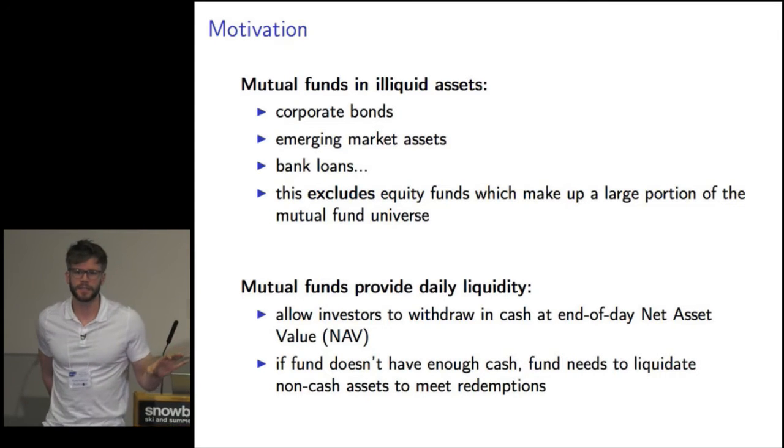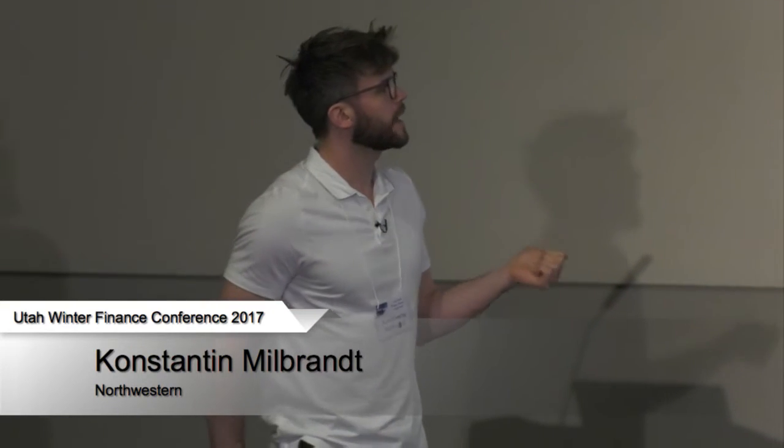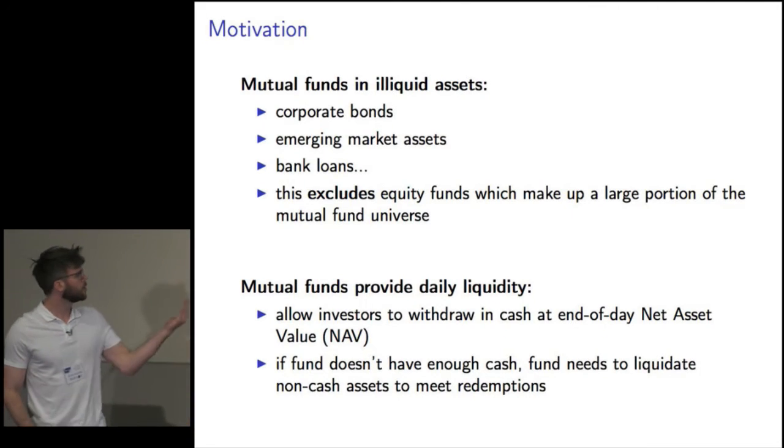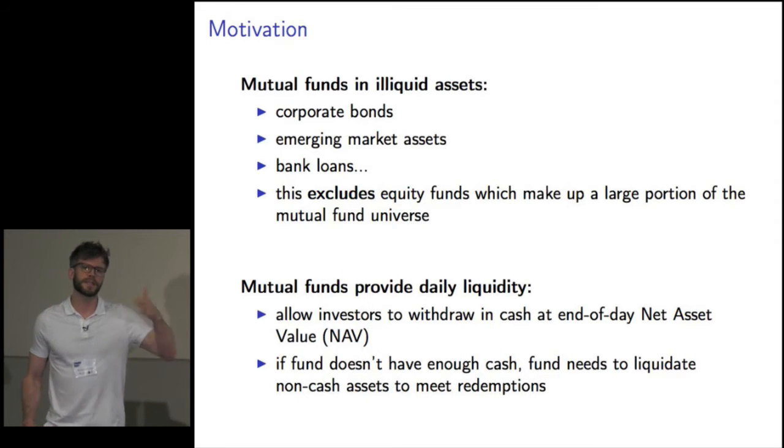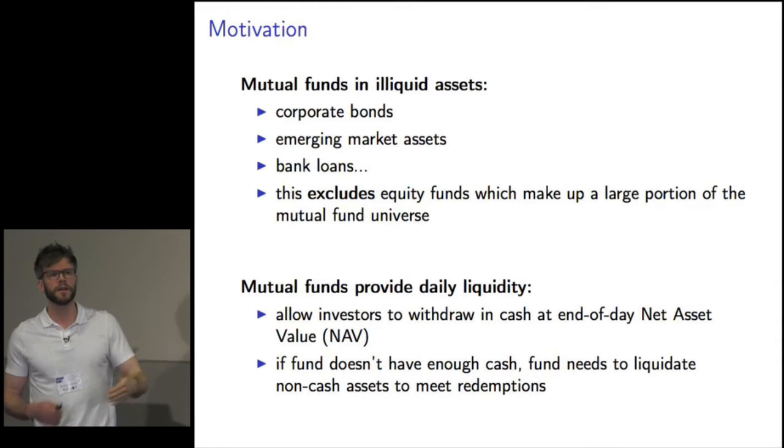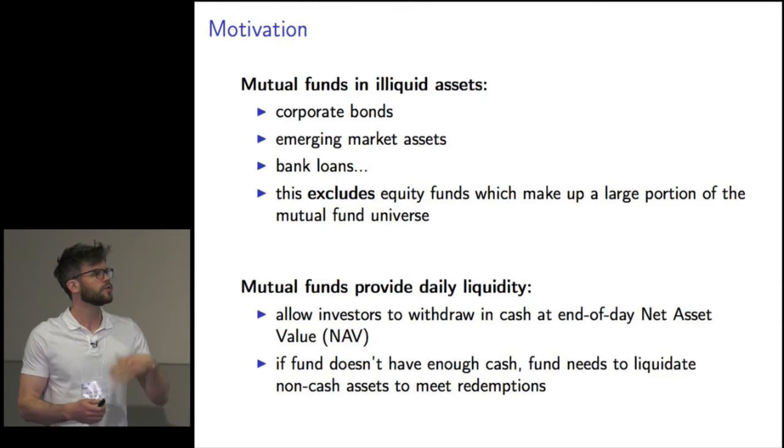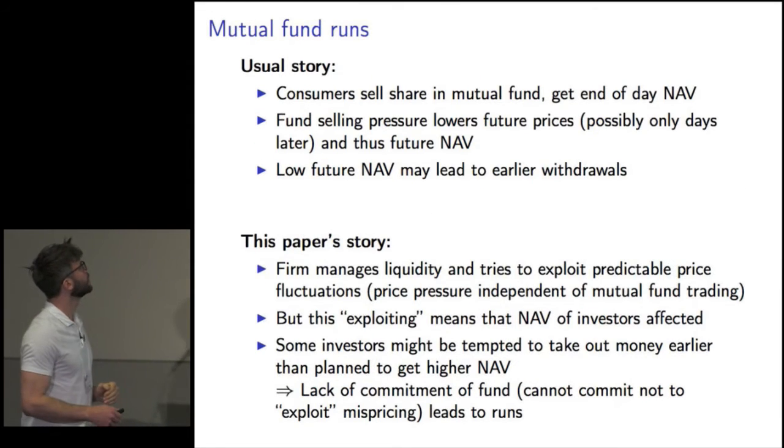If you have a mutual fund in illiquid assets, one benefit it provides to the holder is daily liquidity — allowing an investor to withdraw in cash at the end of the day at the net asset value (NAV). If the fund doesn't have enough cash to meet redemptions, it needs to liquidate non-cash assets. The main mechanism of the paper originates exactly from this: when you need to liquidate assets at below-market prices, you affect the NAV, and if expectations of future liquidations change future NAV, that may make investors more or less willing to wait.